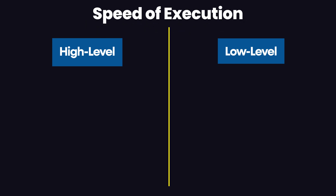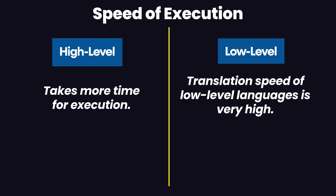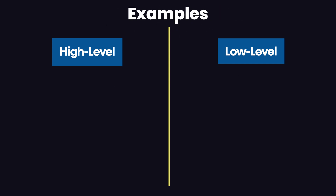The main differentiating factor between high level and low level languages is the speed of execution. High level languages take more time for execution because they require a translation program, while low level languages have a very high translation speed. This is because for high level languages, you need a third-party software or package to convert the high level language into low level language, which is then converted to assembly language and executed.